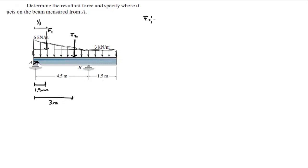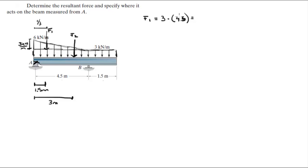F1 is equal to this length — not the long length, don't mess it up. This is equal to 6 minus 3, which is 3 kilonewtons per meter. So F1 is equal to 3 kilonewtons per meter times the length of the triangle, which is 4.5, so 3 times 4.5 over 2 — because it's a triangle, it's an area — so F1 is equal to 6.75 kilonewtons.